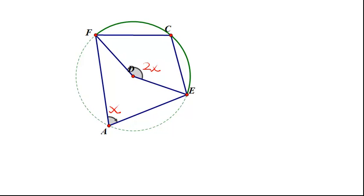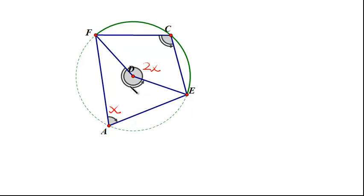There is another arc here — arc EAF — and that arc is subtended by the angle at C. On the same arc EAF we have a central angle. The central angle subtending arc EAF is twice as big as the peripheral angle subtending arc EAF. So we can put the measures of these angles: let's call the peripheral angle Y, and the central angle is twice as large — it's 2Y.